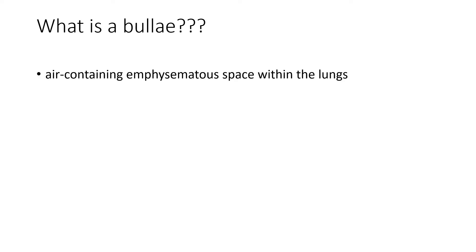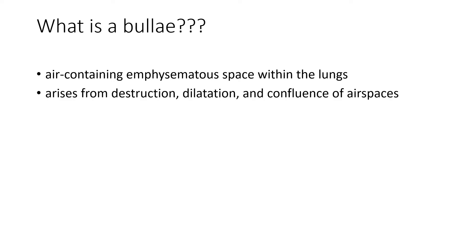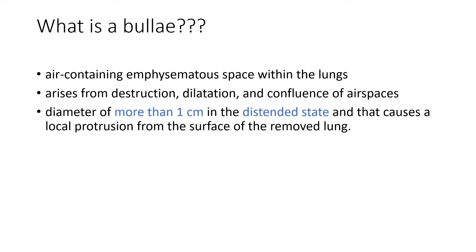What is a bulla? It is an air-containing emphysematous space within the lungs. It arises from the destruction, dilatation and confluence of the air spaces. What would be the diameter? It is around more than 1 cm in the distended state, and that causes a local protrusion from the surface of the removed lung. This is a bulla.